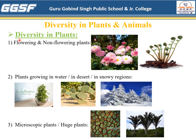Now let's focus on the point diversity in plants. A great variety of plants is found on the earth. Some plants have colorful flowers, that is called flowering plants, while some plants do not bear flowers, that is called non-flowering plants. Some plants like lucky bamboo grow in water, while some plants like cactus grow in desert, while some plants grow in snowy regions. Some plants can't be seen without a microscope — they are very small in size — whereas some plants are huge in size.